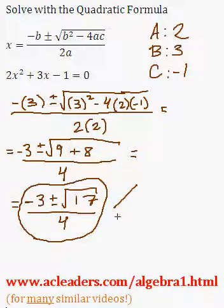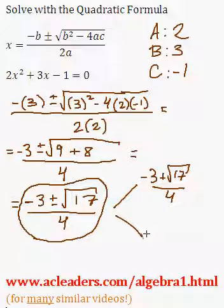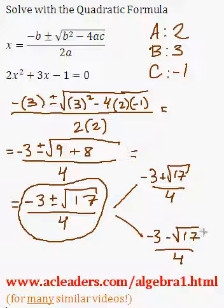If that's the case, you can actually plug these guys into the calculator and go negative 3 plus root of 17 over 4, and negative 3 minus the root of 17 over 4.